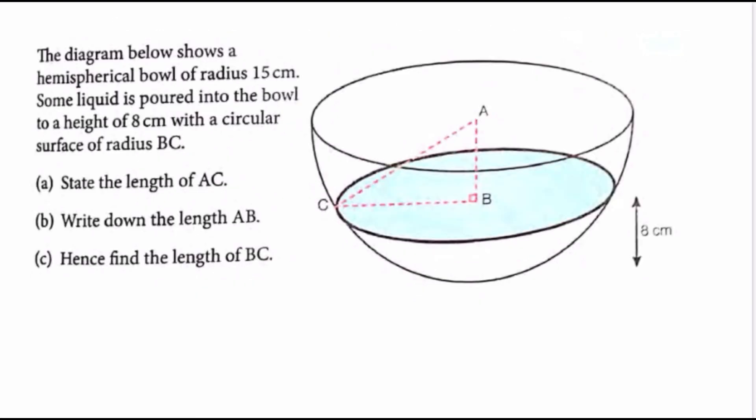The diagram below shows a hemispherical bowl of radius 15 centimeters. Some liquid is poured into the bowl to a height of 8 centimeters with a circular surface of radius BC. State the length of AC. Write down the length AB. Hence, find the length of BC.